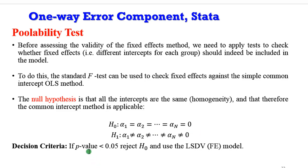What would be the decision criteria? If the p-value is lower than 0.05, the null hypothesis is rejected and the least square dummy variable, which is also the fixed effects model, is applied.